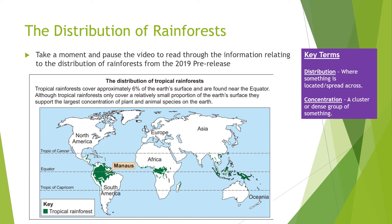So this week we're going to have a look at the distribution of tropical rainforests. What you can see on your screen is taken from the first section of the pre-release booklet. I suggest you pause the video now and take a moment to read through the information and study the map. You may want to consider what sort of questions you might expect to be linked to this, so pause the video.